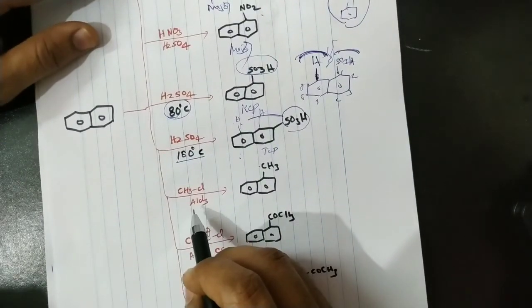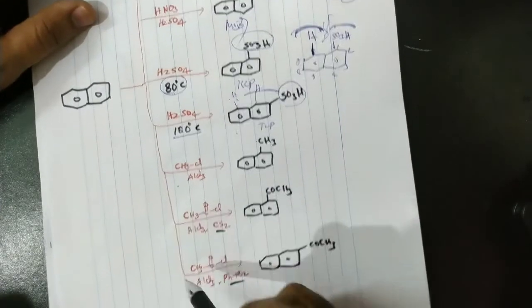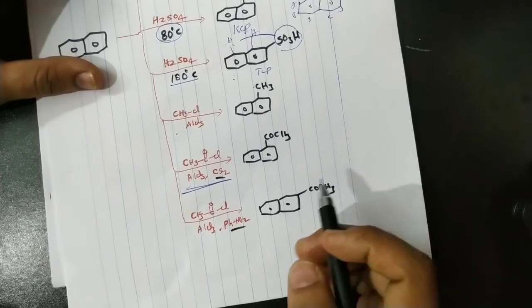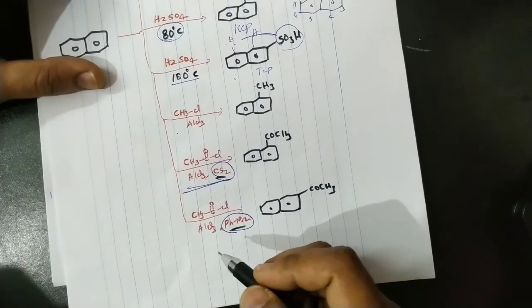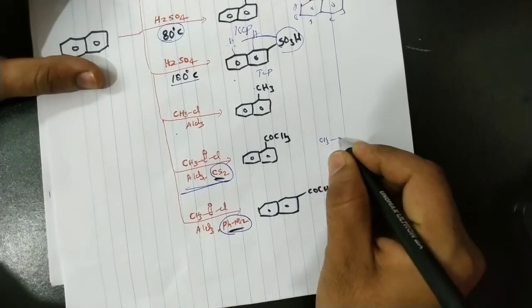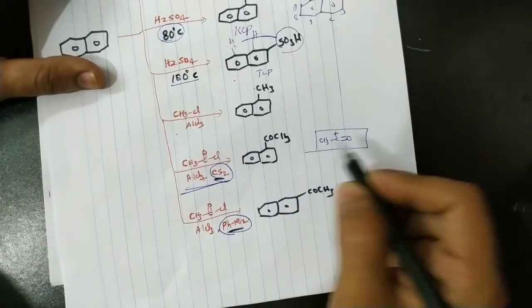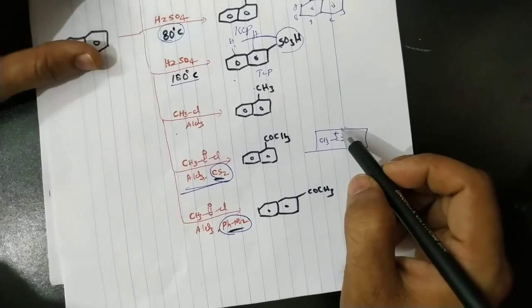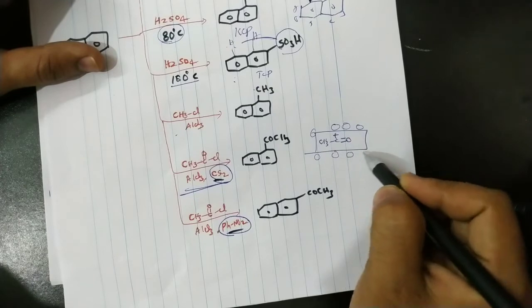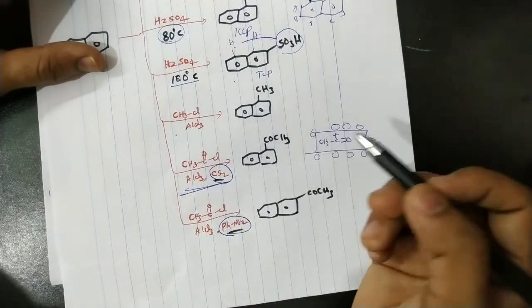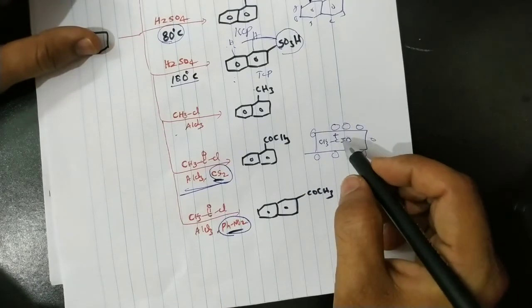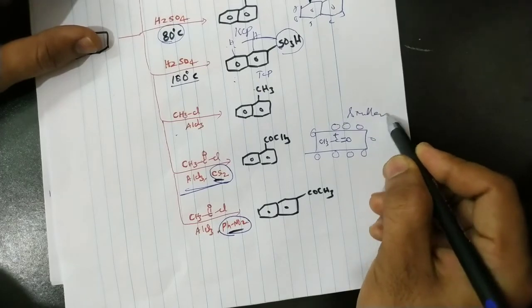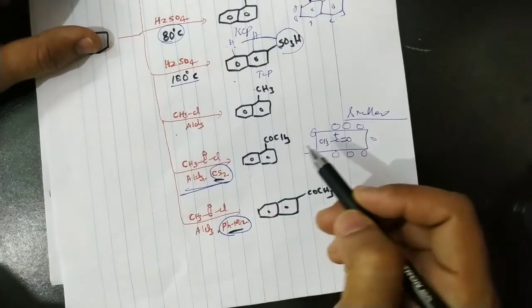In alkylation, the methyl group enters at the first carbon. In acylation, there is an important specificity regarding solvent. Using carbon disulfide as solvent: the acylium ion (CH₃C=O⁺) is an ionic species, but carbon disulfide is non-polar, so there is little solvation of the acylium ion. The solvated acyl cation has a smaller effective size, so it majorly attacks at the first carbon (alpha position).